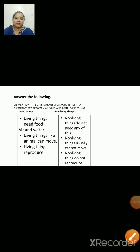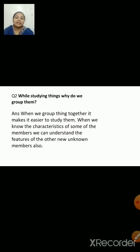Answer the following questions. Mention three important characteristics that differentiate between a living and a non-living thing. Living things need food, air and water; non-living things do not need any of these. Living things like animals can move; non-living things usually cannot move. Living things reproduce; non-living things do not reproduce. While studying things, why do we group them? When we group things together, it makes it easier to study them. When we know the characteristics of some members, we can understand the features of other new unknown members also.